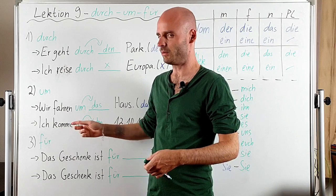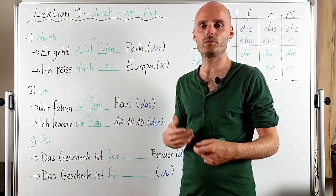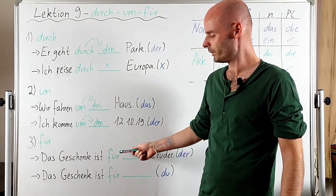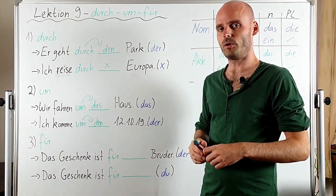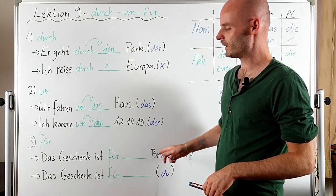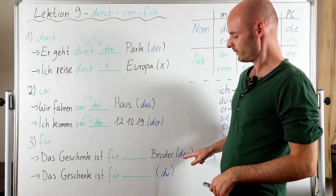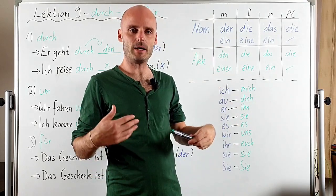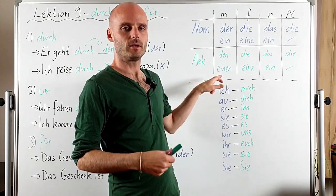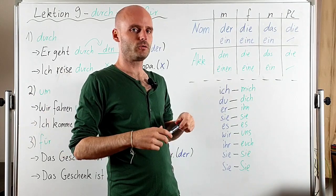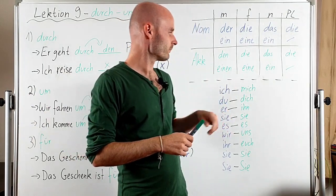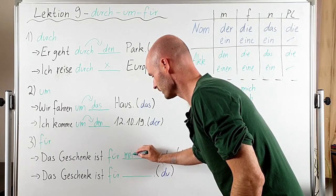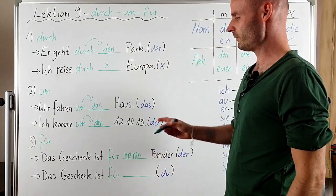The last one, which is probably the most common accusative preposition, is 'für,' which means 'for.' For example: 'Das Geschenk ist für meinen Bruder' — the gift is for my brother. We know that 'Bruder' is 'der,' so in accusative we use 'meinen.' The ending is the same for possessive pronouns: 'meinen,' 'deinen,' 'seinen' — you should know the possessive pronouns by now.